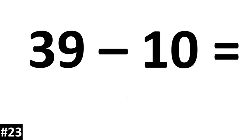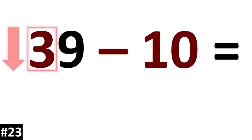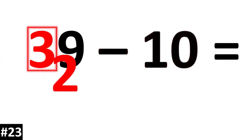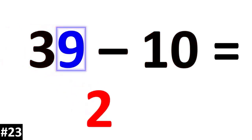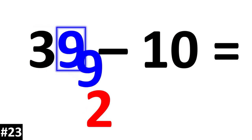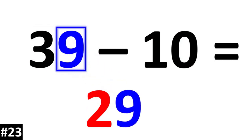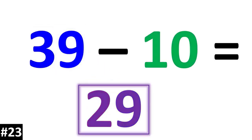39 minus 10. The tens value of 3 is going to go down to 2. The ones value stays the same, so we have 29.